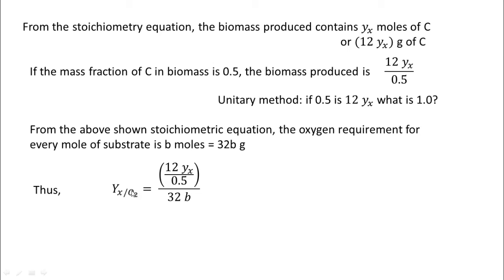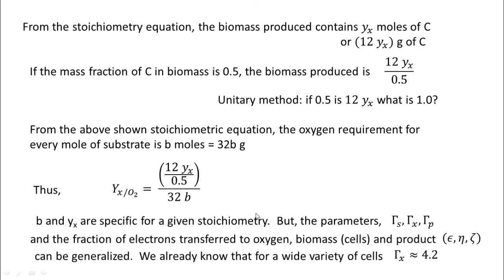Therefore, the yield of cells with respect to substrate: the mass of cells is 12Y_x by 0.5 and the mass of oxygen is 32b. For the purposes of this problem, let O and O_2 refer to the same molecular oxygen. b and Y_x here are specific for a given stoichiometry. You need to know the actual conditions to be able to estimate these, if we talk in terms of b and Y_x.